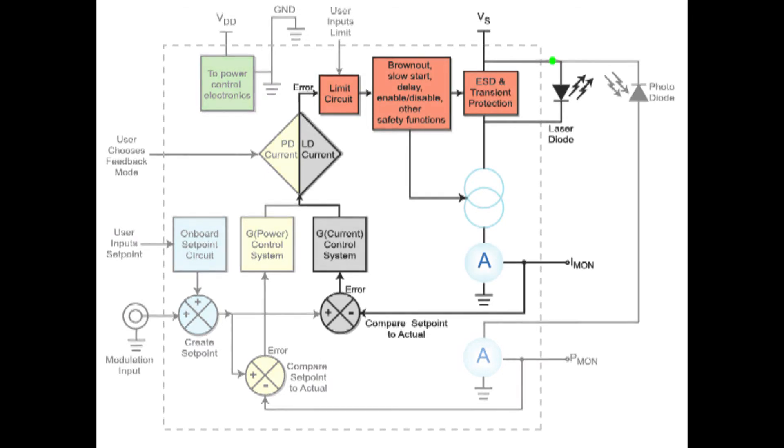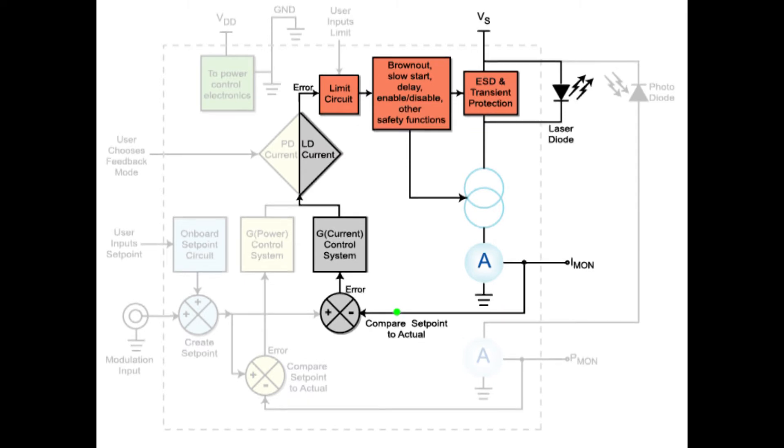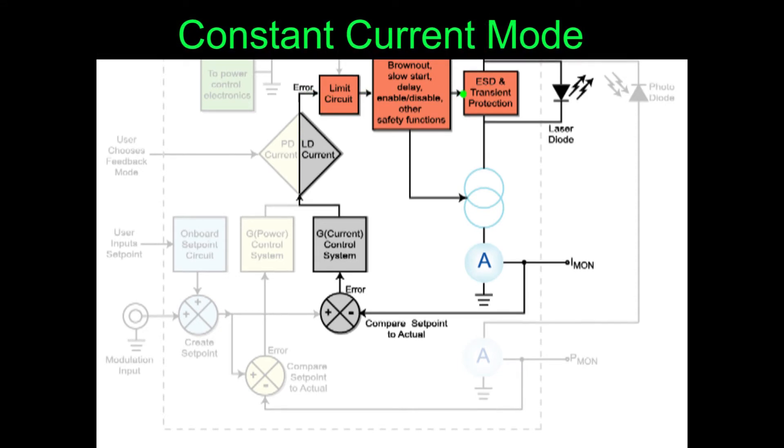If laser diode current is used as feedback, the control system will use the error signal from the laser diode current to keep the output of the adjustable current source constant. This is called constant current mode.